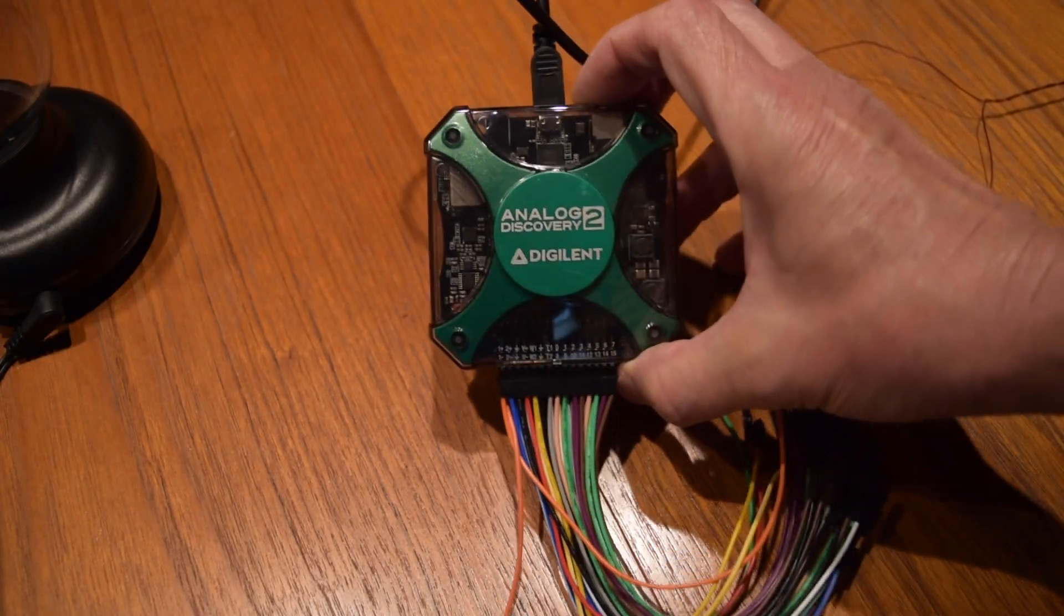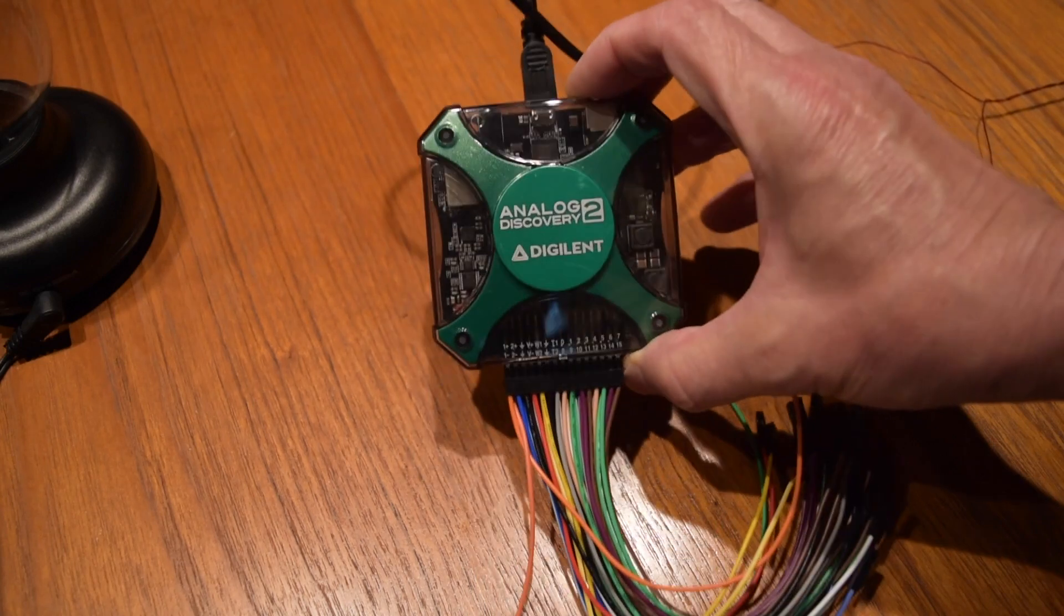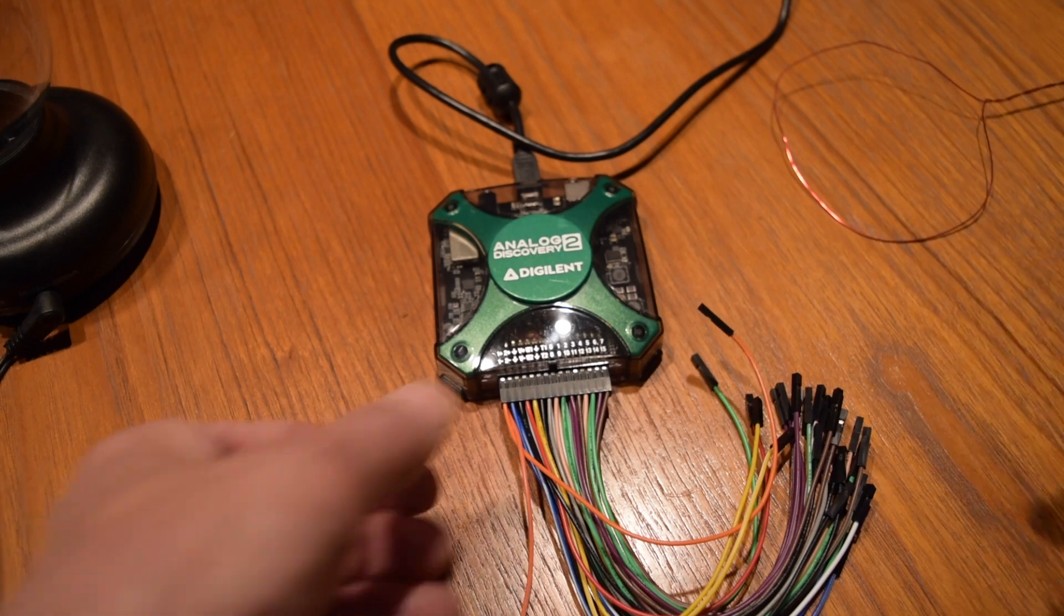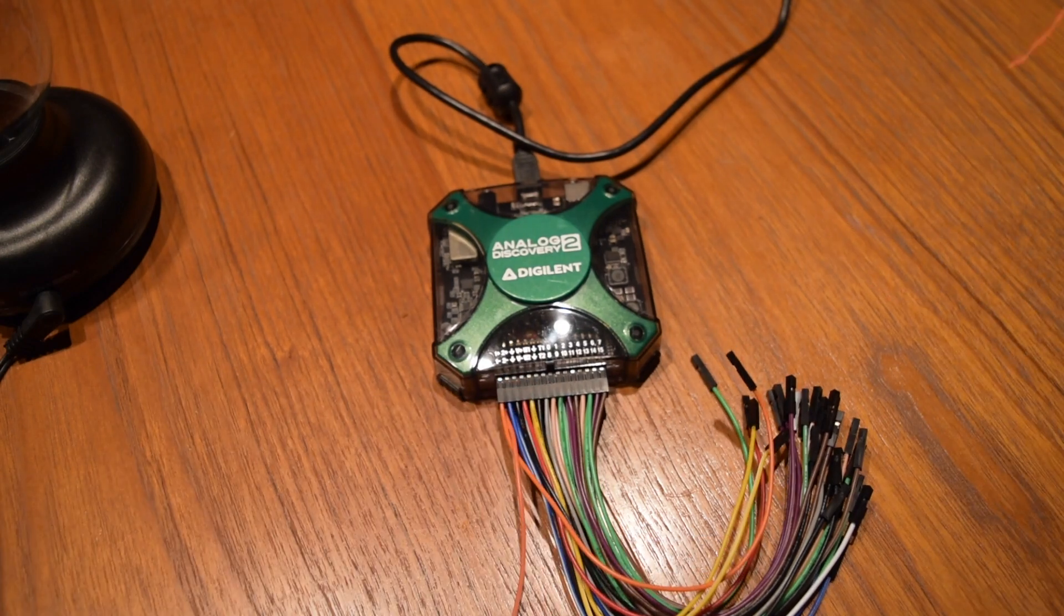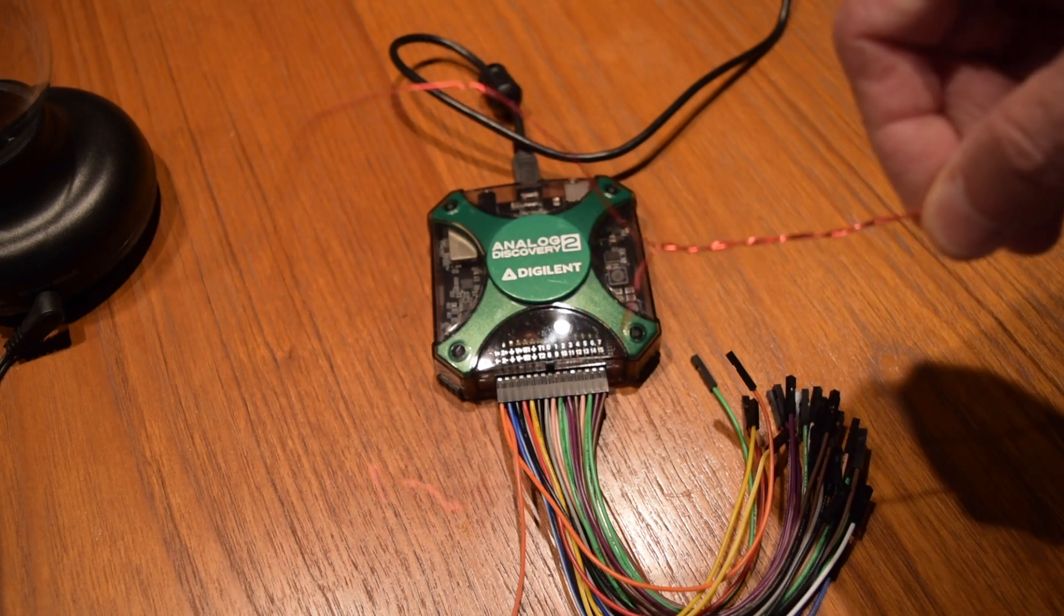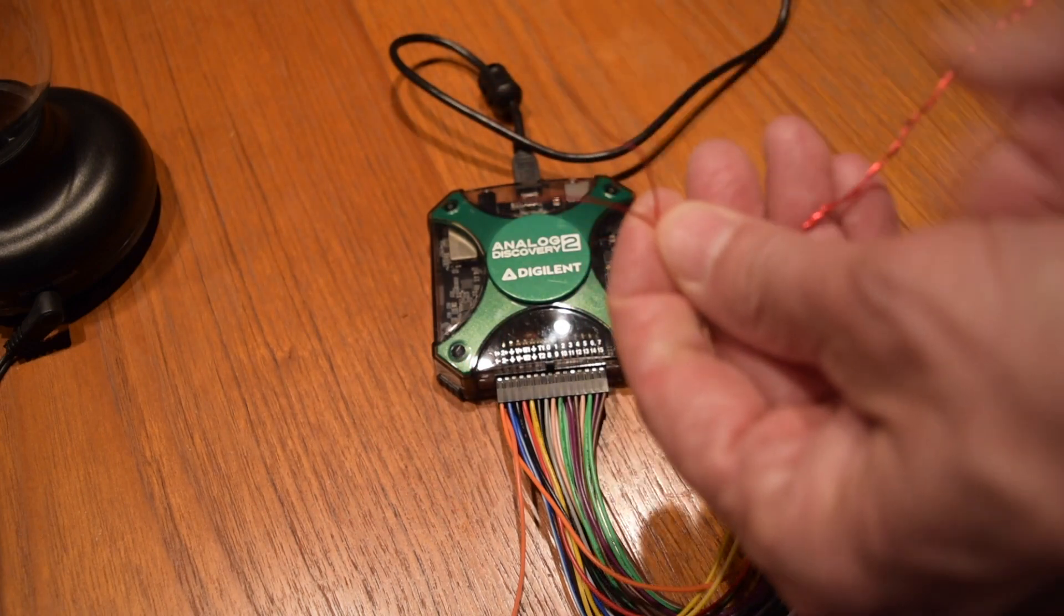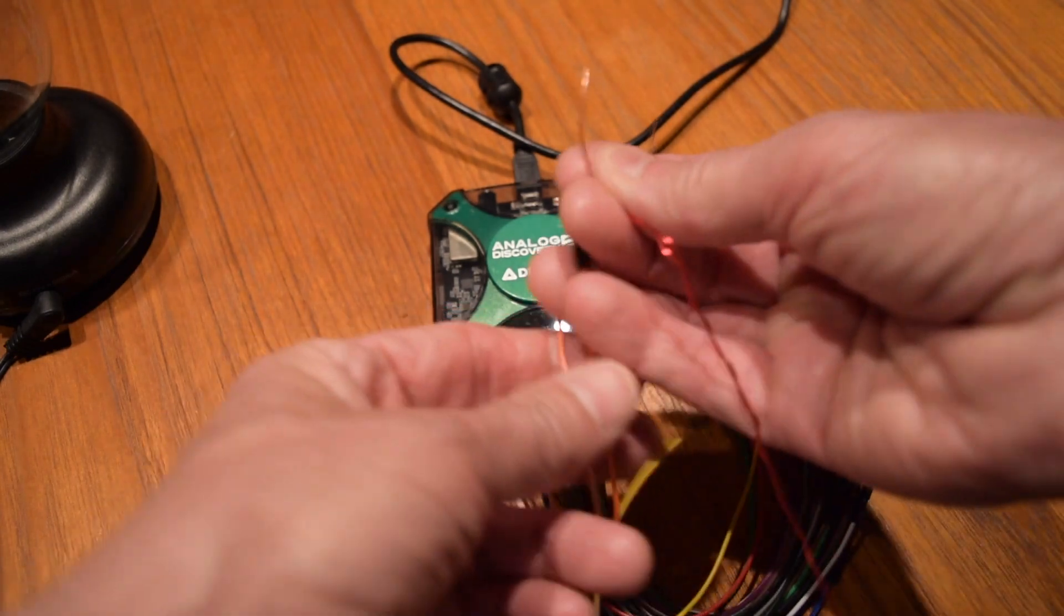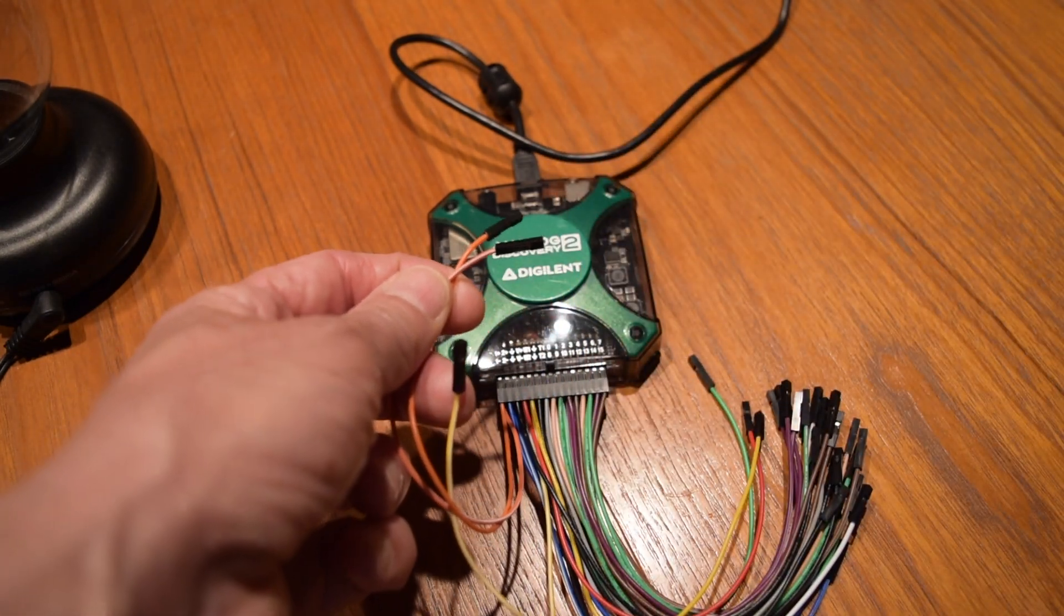I have an analog discovery 2 which attaches to my laptop, and one of the pieces of test equipment it has is an oscilloscope. Now I fastened a loop antenna from some magnet wire, removing the insulation from the end, and I'm going to connect it to the oscilloscope input.